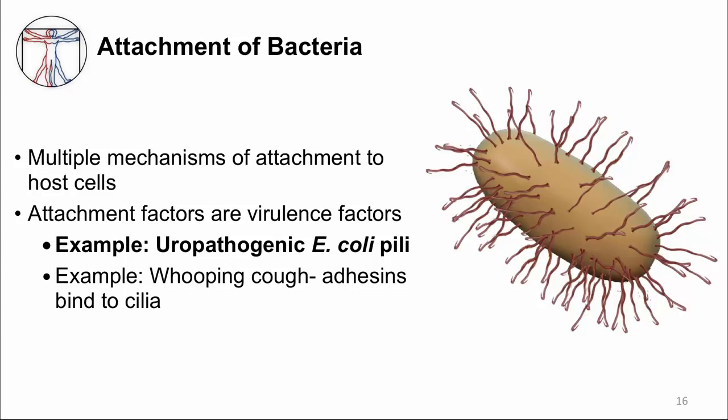For example, E. coli is a commensal colonizing our large intestine. Some strains have evolved pili that can attach to the surface of cells lining the urinary bladder, and these are called uropathogenic E. coli. You can see the pili in the diagram — it's the brown structure sticking out of the bacteria. The strains that have these pili are responsible for most urinary tract infections.